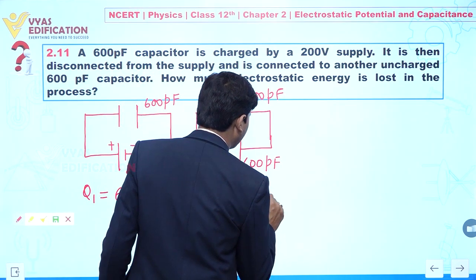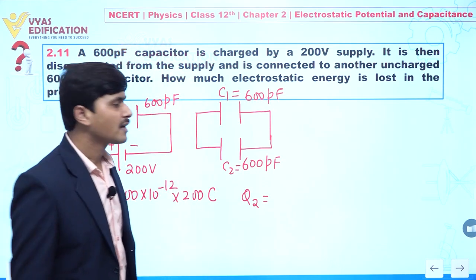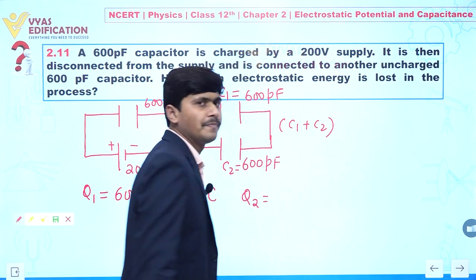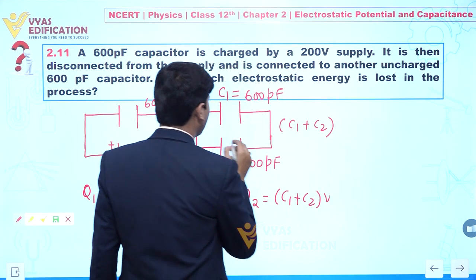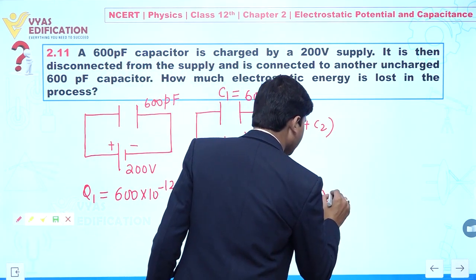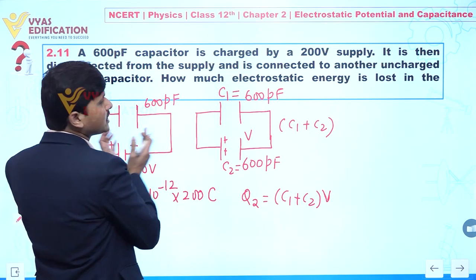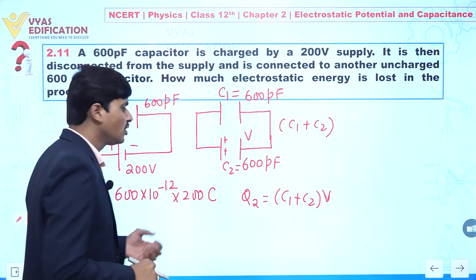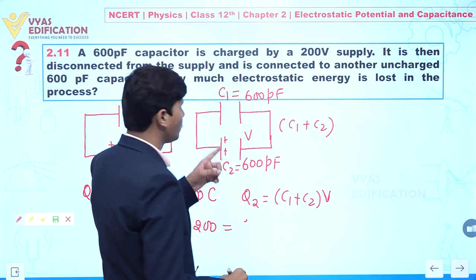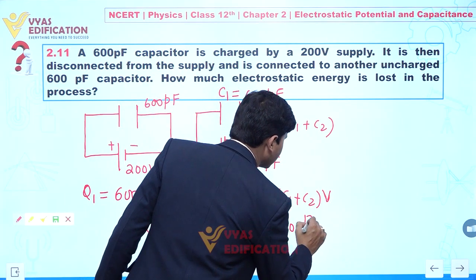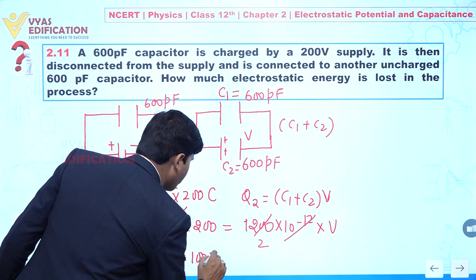Now we find Q2. We have two capacitors, C1 and C2, connected in parallel. The equivalent capacitance is C1 plus C2. Let V be the common potential across this parallel combination. Since both are connected in parallel, the potential difference remains the same. Total charge on the system remains constant, so: 600 × 10⁻¹² × 200 = 1200 × 10⁻¹² × V. From here, V equals 100 volt.